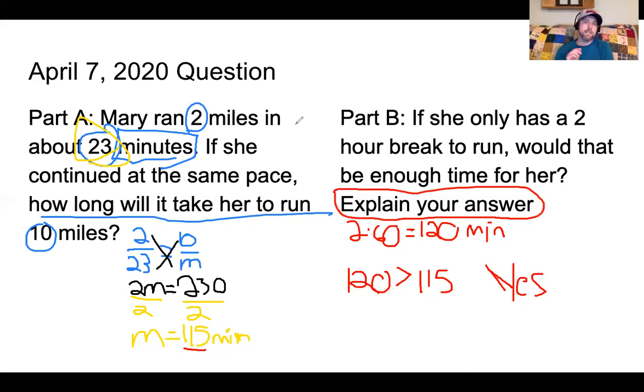So if you said yes, that 2 hours is 120 minutes and she can run 10 miles in less than that, then I accept that. But if you put no, I want you to tell me why. But it's all going to depend on your explanation. It's going to depend on what answer you got over here in part A.